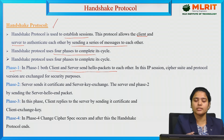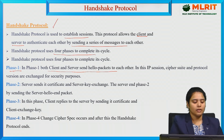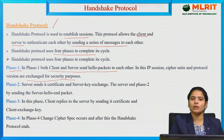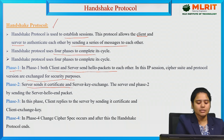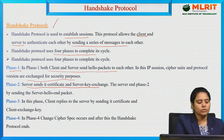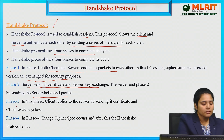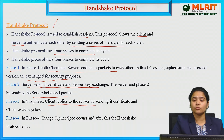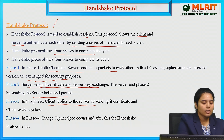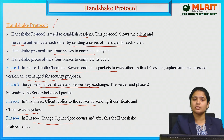In phase one, both client and server exchange hello packets for security purposes. In phase two, the server sends its certificate and performs server key exchange, ending with the server hello done packet. In phase three, the client replies by sending its certificate and performing client key exchange. In phase four, the cipher is changed — meaning the handshake is finished and encryption begins.